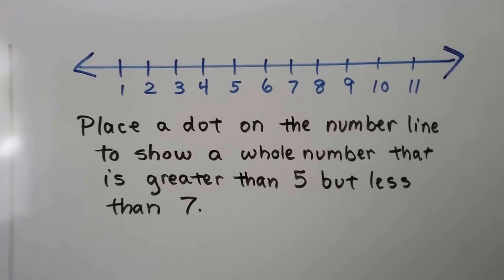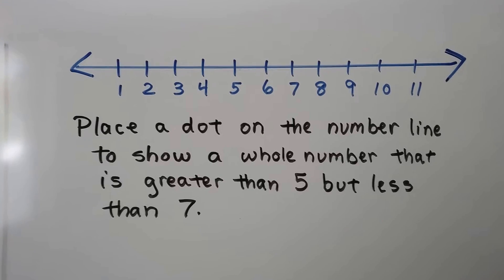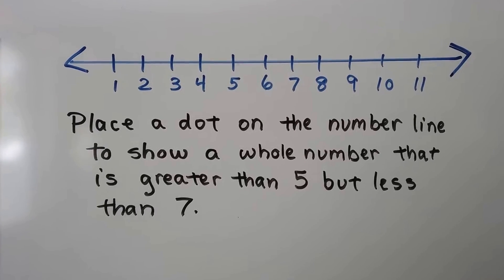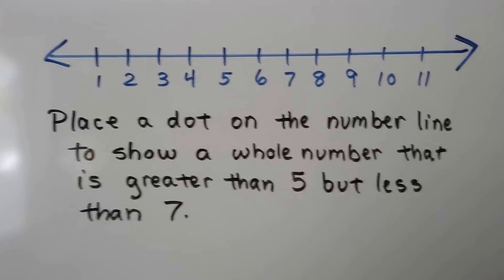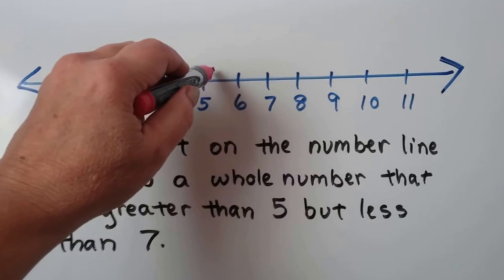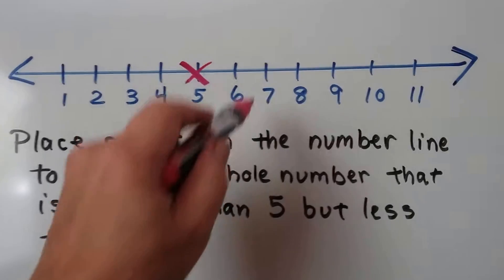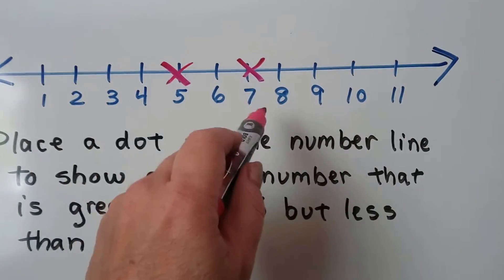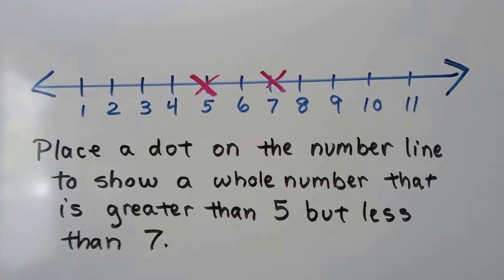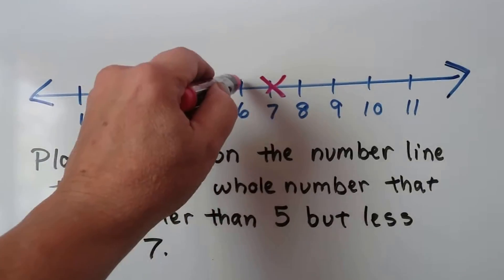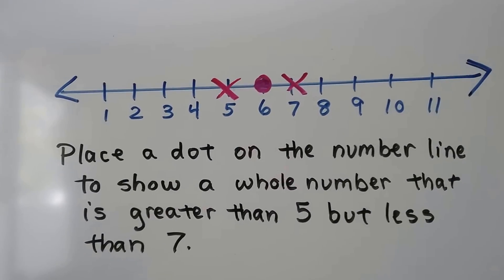This one says place a dot on the number line to show a whole number that is greater than 5 but less than 7. So it's greater than 5 so that means it can't be 5. It's less than 7 so it's not a 7, it's got to be less than a 7. So the only number that is greater than a 5 and less than 7 would be 6. So that would be our place.